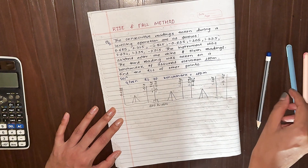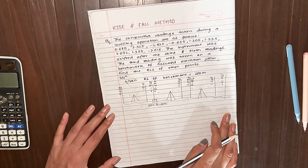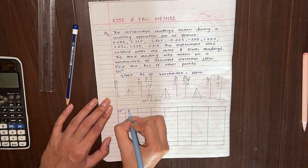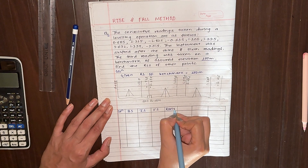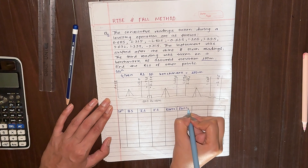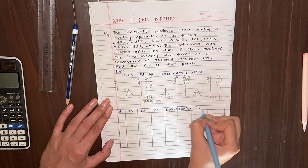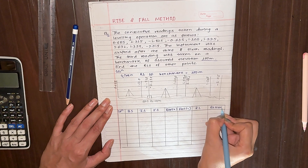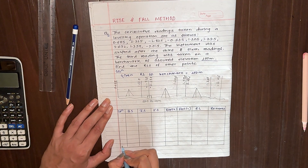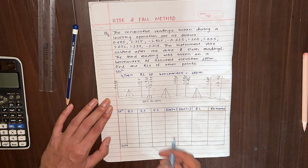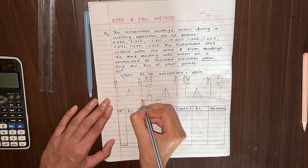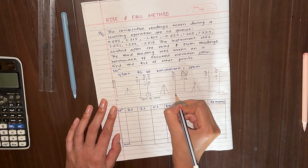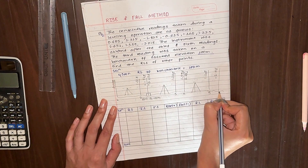Now we will draw a level field book. The columns are: station, back sight, intermediate sight, fore sight, rise, fall, RL, and remarks. The stations are: 1, 2, benchmark, 3, 4, 5, and 6.